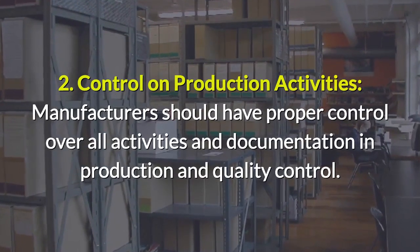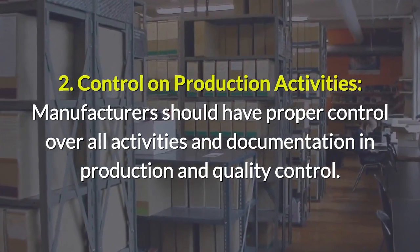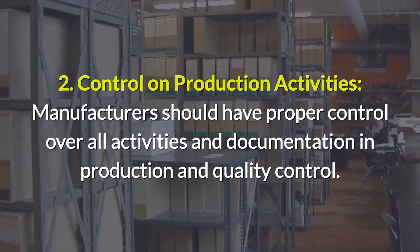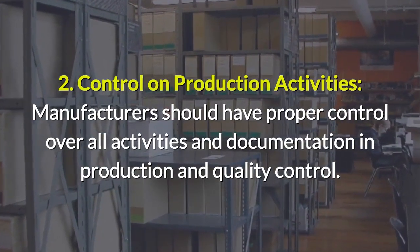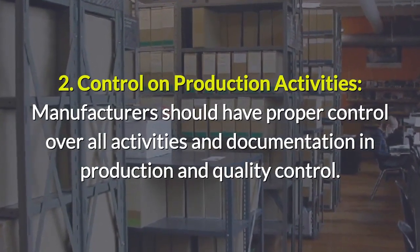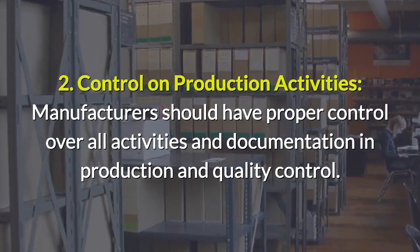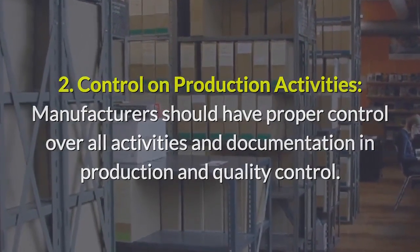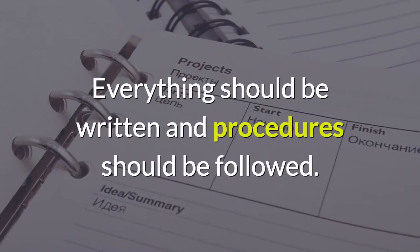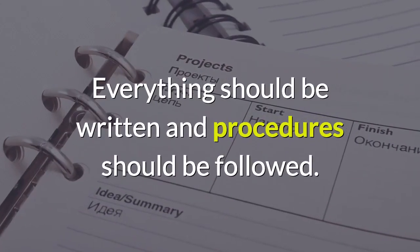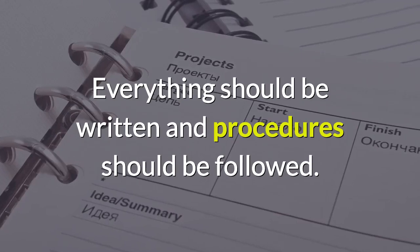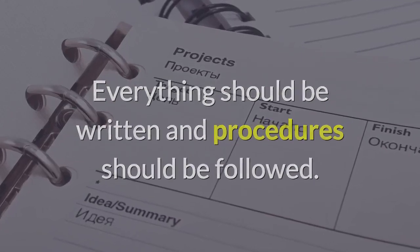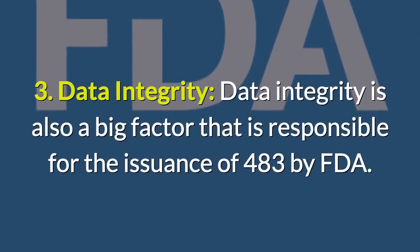2. Control on production activities. Manufacturers should have proper control over all activities and documentation in production and quality control. Everything should be written down and procedures should be followed.